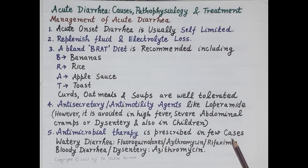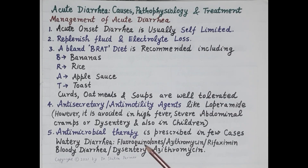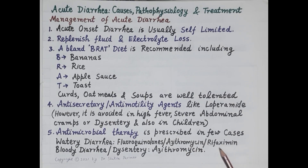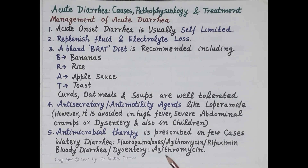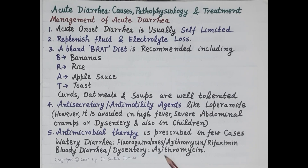Antimicrobial therapy is prescribed in few cases and reduces the duration and severity of acute diarrhea. For watery diarrhea, fluoroquinolones such as norfloxacin and ciprofloxacin, azithromycin, as well as rifaximin can be administered. For bloody diarrhea — that is, dysentery — azithromycin should be used. This covers the causes, pathophysiology, and treatment of acute diarrhea.